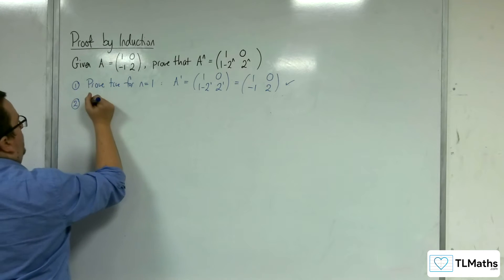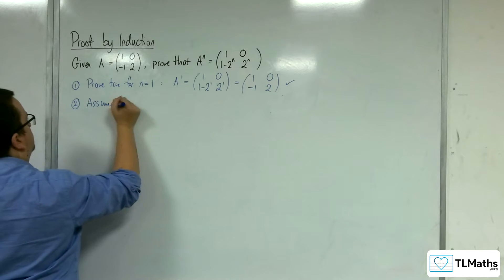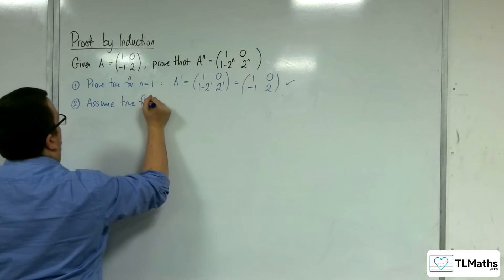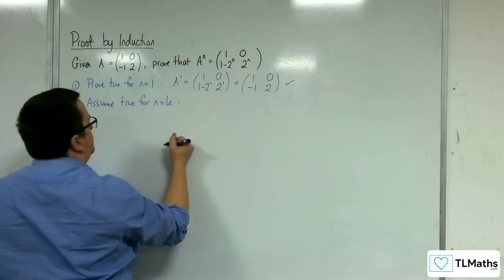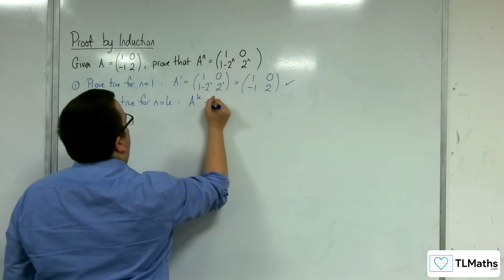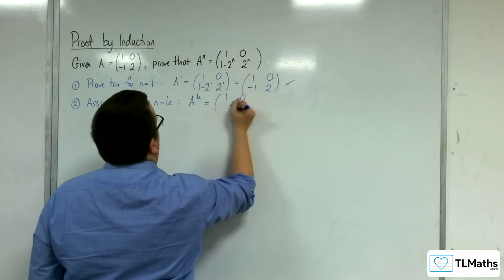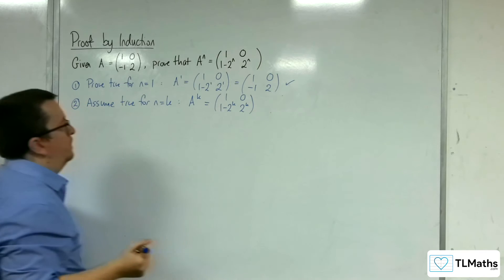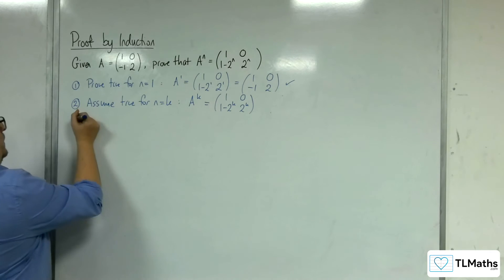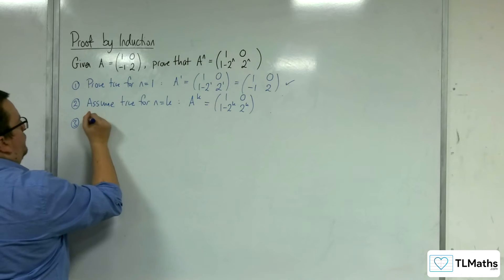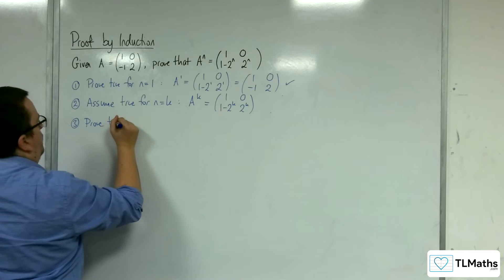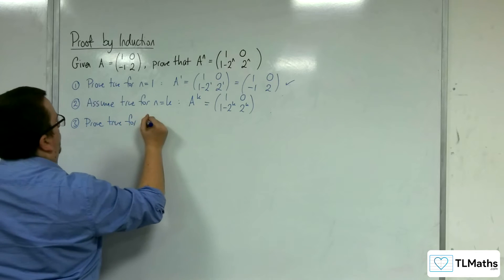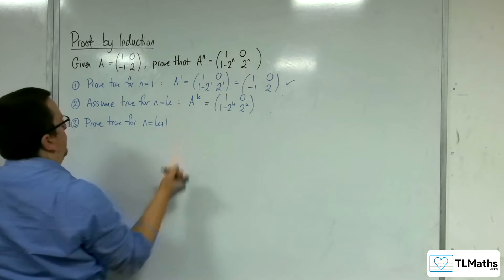Step 2: assume true for n equals k, so A to the k equals (1, 0; 1 - 2^k, 2^k). Step 3: prove true for n equals k plus 1.